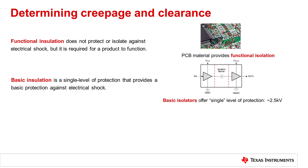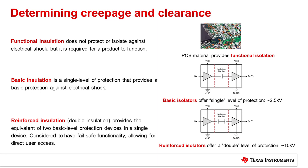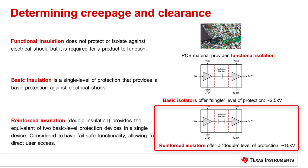If the basic insulation fails, there is exposure to hazardous voltage. For integrated circuit isolators, the term basic isolator describes isolation that acts as a single level of protection for voltages typically between 2.5 to 3 kV and occasionally as high as 5 kV. Reinforced insulation, or double insulation, provides the equivalent of two basic level protection devices in a single device and is also considered to have fail-safe functionality, allowing for direct user access. This does not mean there are two devices in a single package, but that the tested insulation of a reinforced isolator performs at twice the level of a basic isolator.